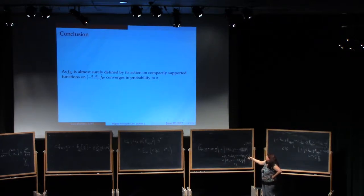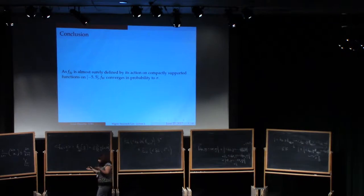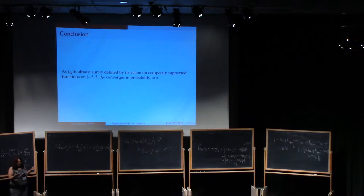So instead of minus 5, 5, I can just take minus 10,000, 10,000. And then I've actually proved what I'm claiming I proved. The bottom line is, this is putting together all of the information that we got yesterday about the expected moments, convergence to the Catalan number, the variance of the moments themselves being small, and therefore we can conclude that f of w bar converges in probability to sigma.